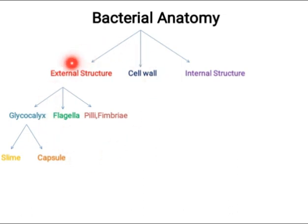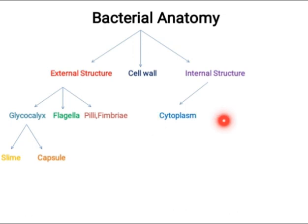After external structures, bacteria have a cell wall, which is located below the external structures. The cell wall has different types: Gram-positive cell wall, Gram-negative cell wall, acid-fast cell wall, and some bacteria like Mycoplasma which have no cell wall at all. Below the cell wall, bacteria have a cell membrane, and below the cell membrane are the internal structures, including the cytoplasmic region.